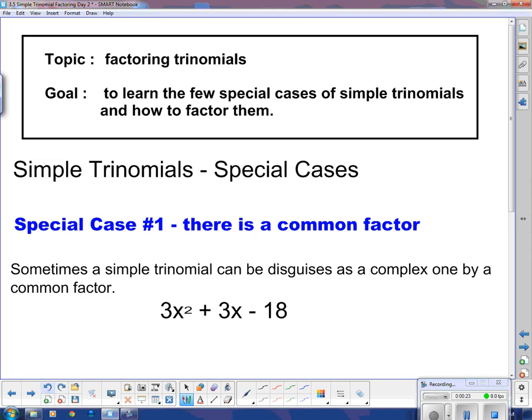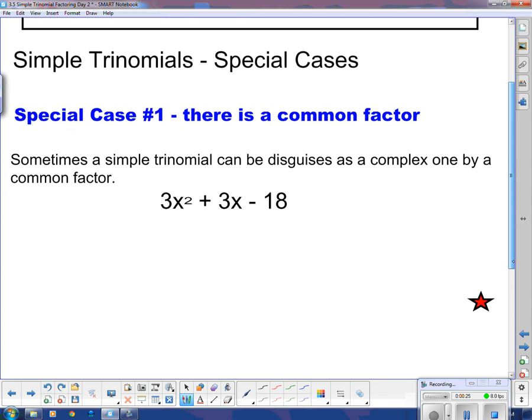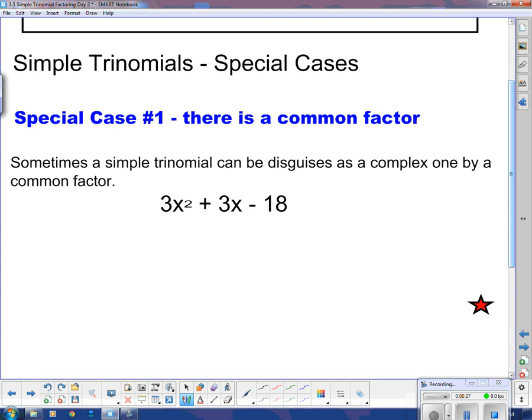Sometimes a simple trinomial can be disguised as a complex one by a common factor. The difference between a simple trinomial and a complex trinomial is this number right here. If there's an a value, and in this case the a value is 3, then we consider this a complex trinomial. However, this is actually not a complex trinomial. It is a simple one in disguise.